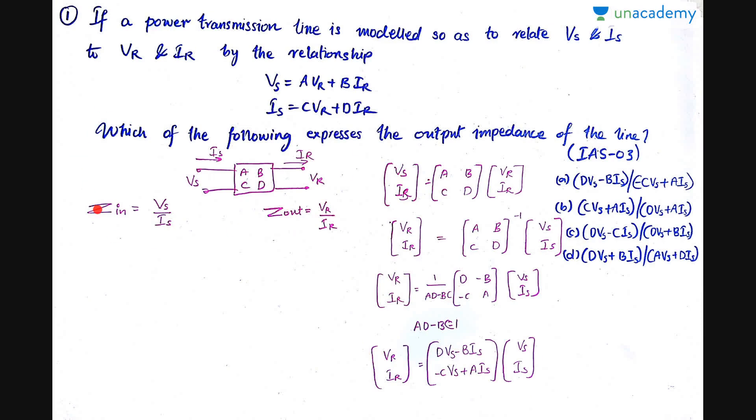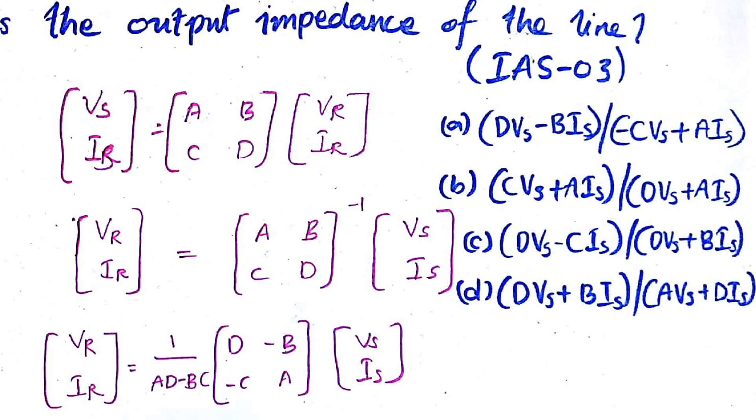Now let me explain this. It is given that you are having ABCD parameters for the transmission line, and you know all these things - these are quite easy things. Now he is asking you to find the output impedance. What is output impedance? Output voltage by output current. Similarly, input impedance means input voltage by input current. Output impedance is what you require. Output voltage is Vr, output current is Ir, so Vr by Ir.